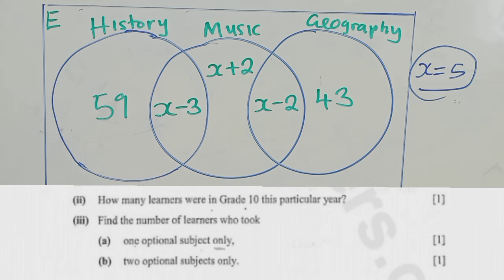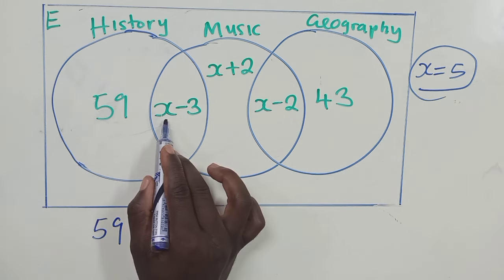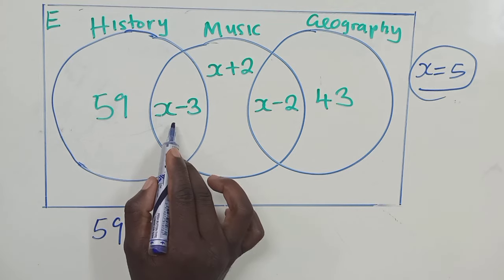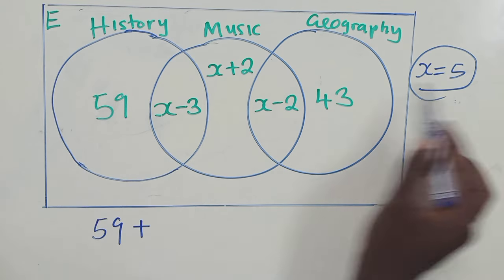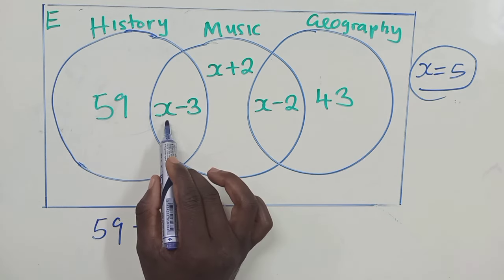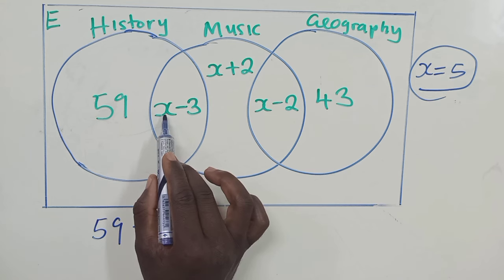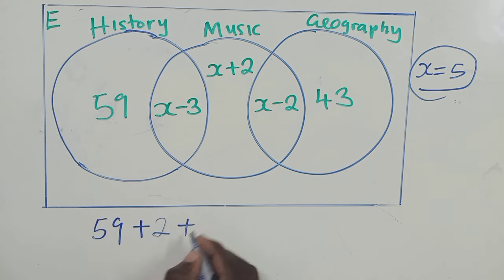We have got 59 plus, if we put x here, what do we have? We have a 2, because if we put 5 right here, 5 minus 3 is equal to 2.